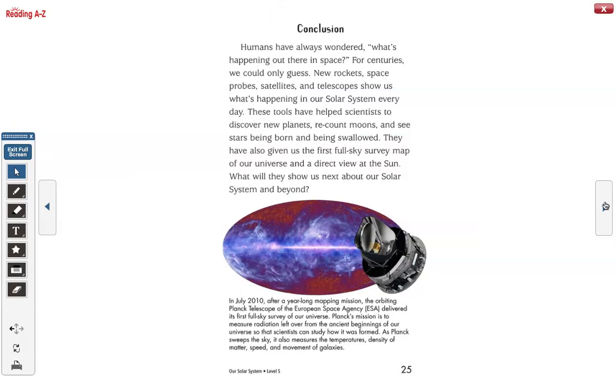Conclusion. Humans have always wondered what's happening out there in space. For centuries, we could only guess. Now rockets, space probes, satellites, and telescopes show us what's happening in our solar system every day. These tools have helped scientists to discover new planets, recount moons, and see stars being born and being swallowed. They have also given us the first full sky survey map of our universe and a direct view of the sun. What will they show us next about our solar system and beyond?